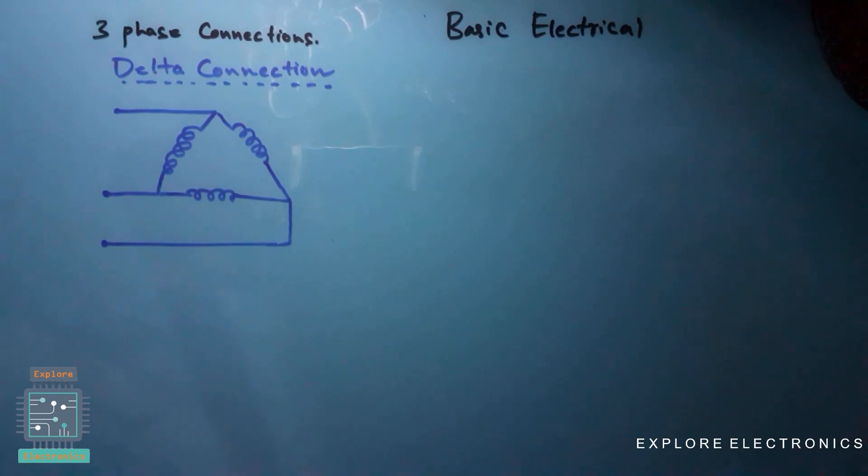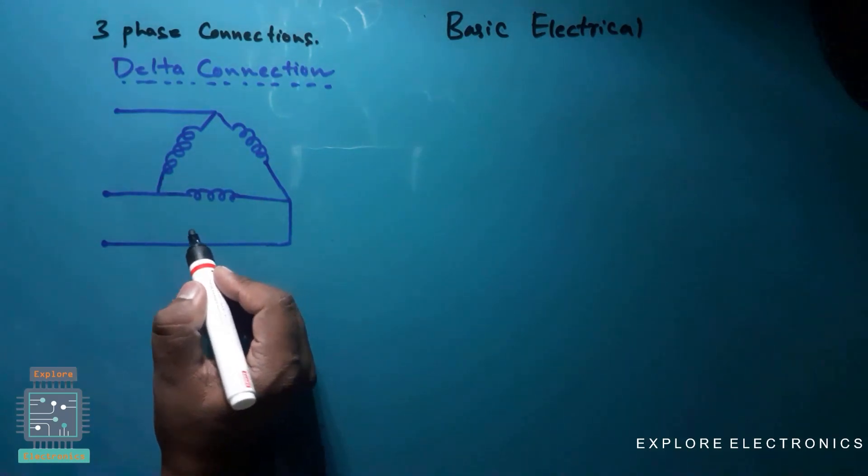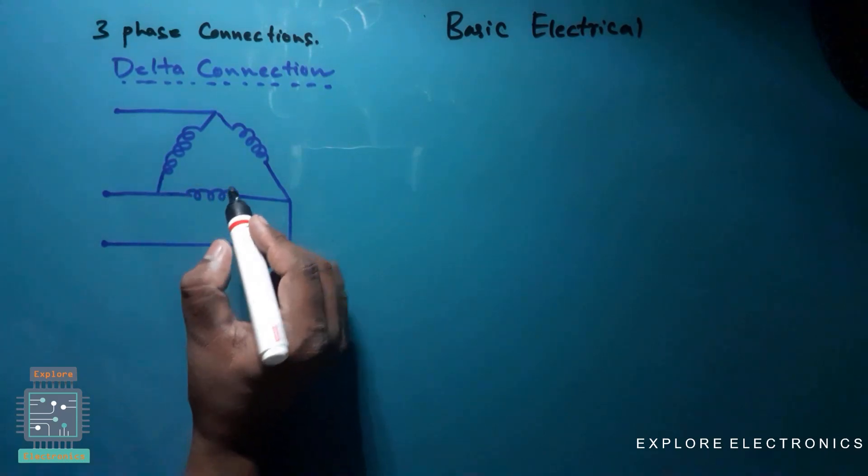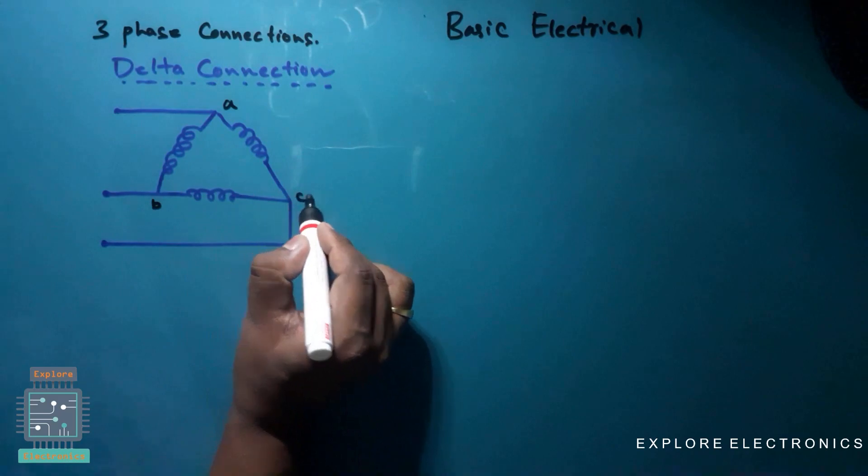In the previous video we have seen star connection where three coils are considered and connected in a star fashion. Now the same three coils which are connected in delta fashion. Let me call this point as A, this is B and this is C.